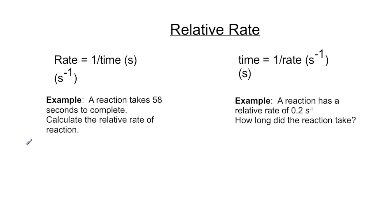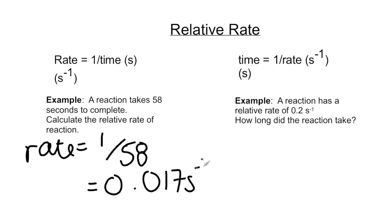Calculating relative rate is really straightforward. We're just going to do rate equals 1 divided by the time in the question which is 58 seconds which will give us a relative rate of 0.017 per second.